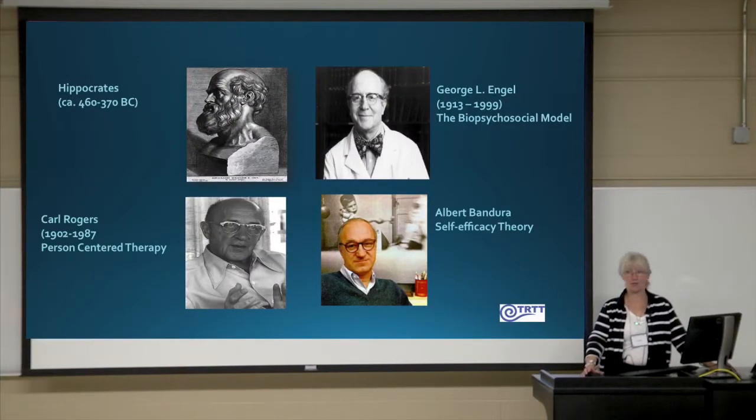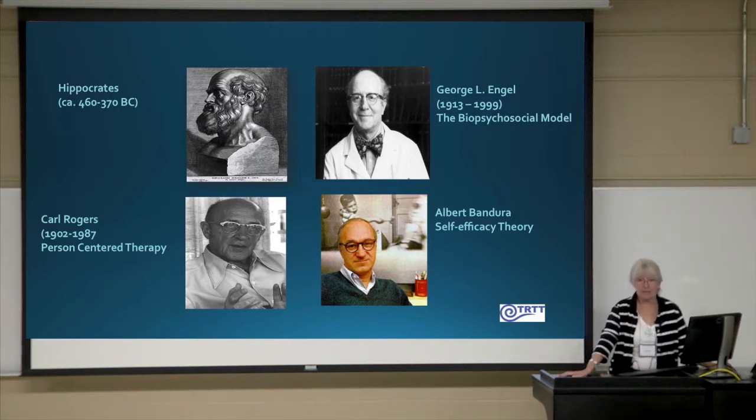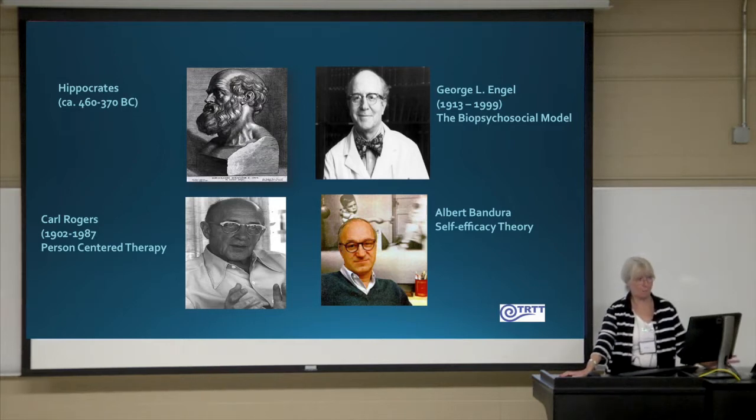George Engel was the first one to say that the medical model is flawed. He pointed out that it doesn't include the whole person. Back when the medical model was evolving, there was a separation of mind and body, and Engel said, let's put them back together — very important for work with people with chronic conditions, where it's not just 'go in, they fix it, you go home.' For chronic conditions involving management, you need to understand the whole person. Engel's contributions in that area were really significant.